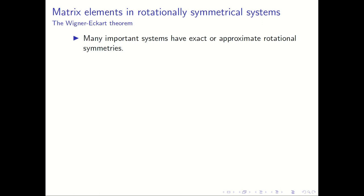Many important systems that we deal with have either exact or approximate rotational symmetry. Sometimes a system may not have full rotational symmetry; it may have rotational symmetry about an axis. Even for such systems, what we are saying will work. We may also have systems which have rotational symmetry broken by a small extra perturbation term, and we may consider the methods we are describing here as stepping stones towards understanding those systems in more detail.